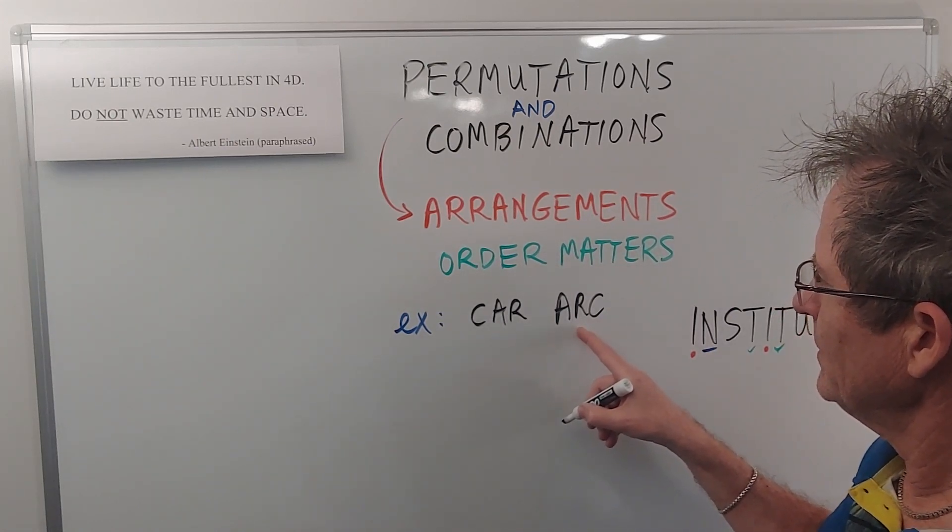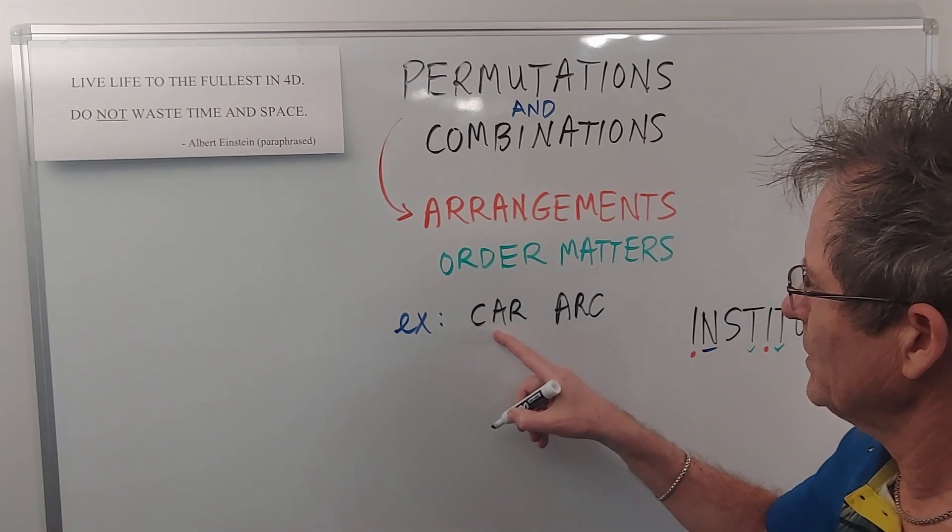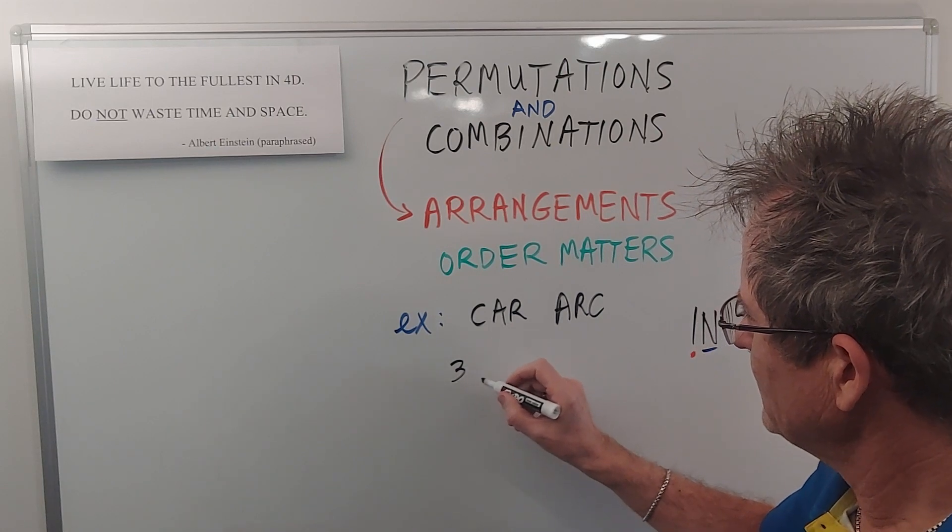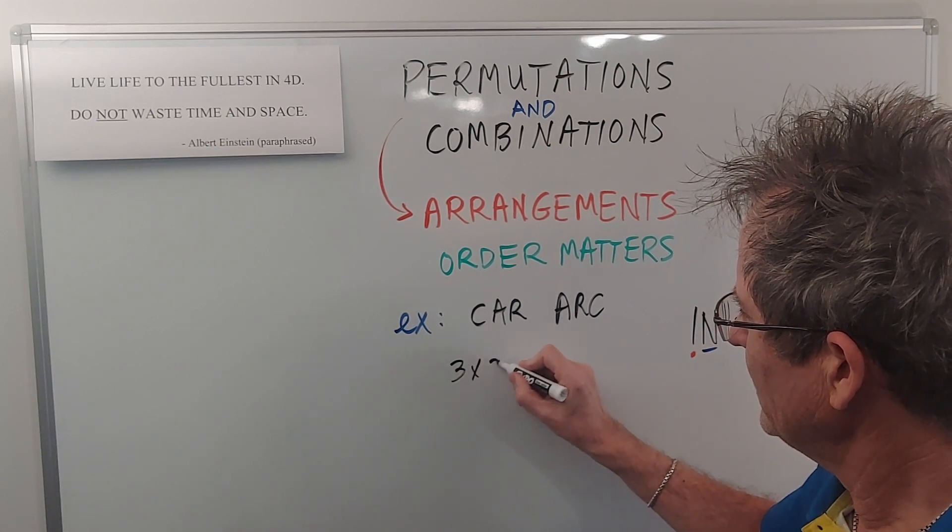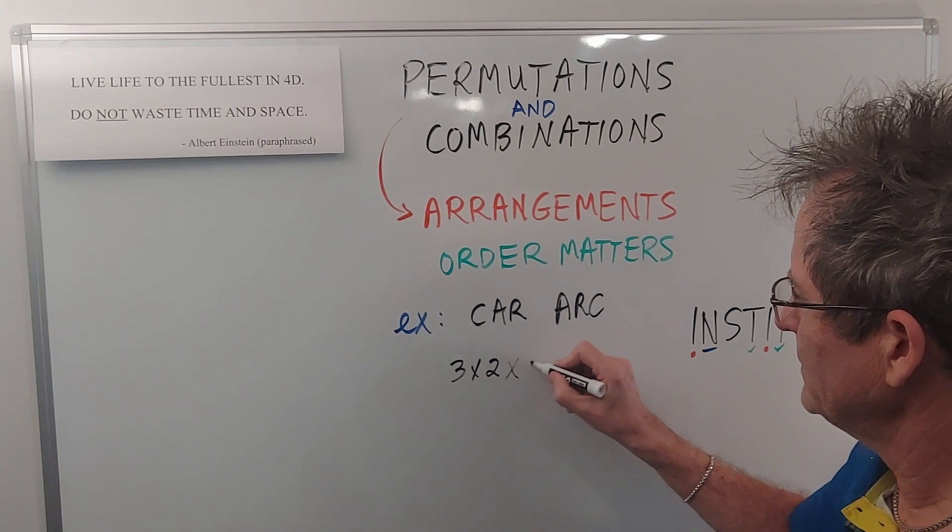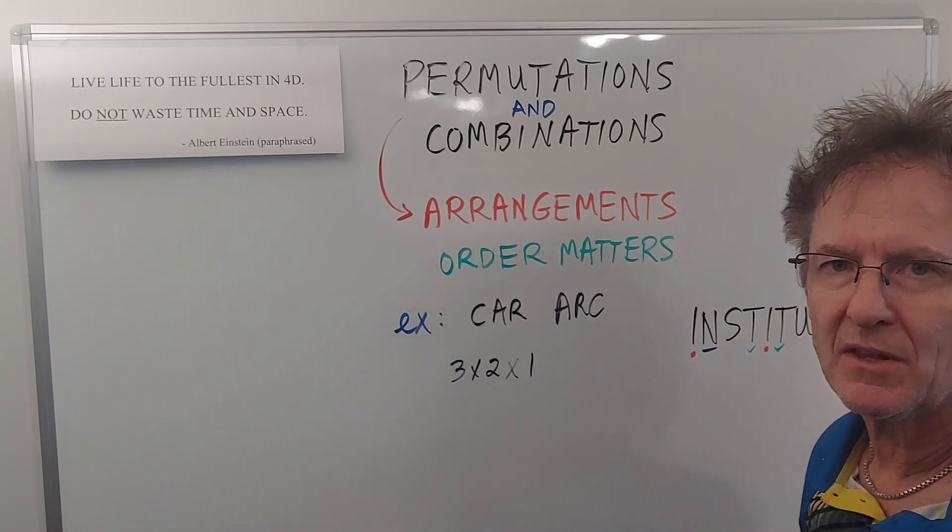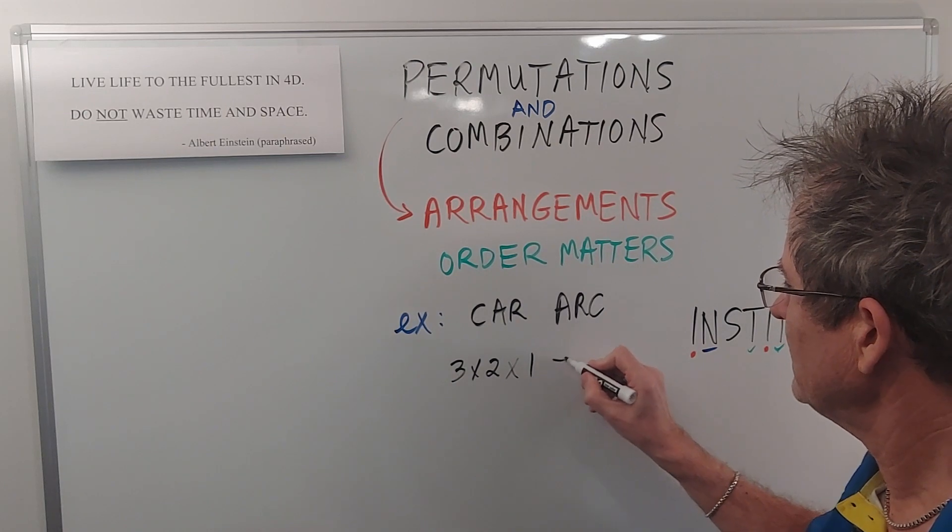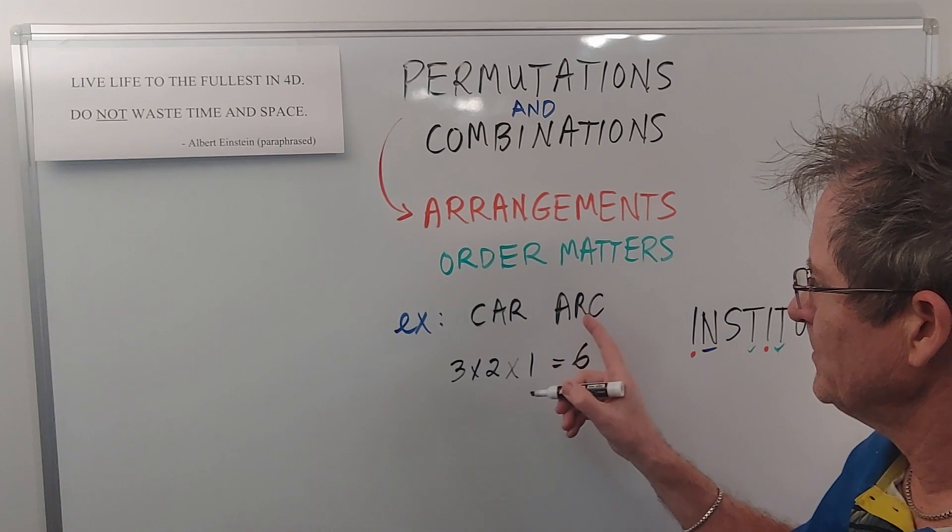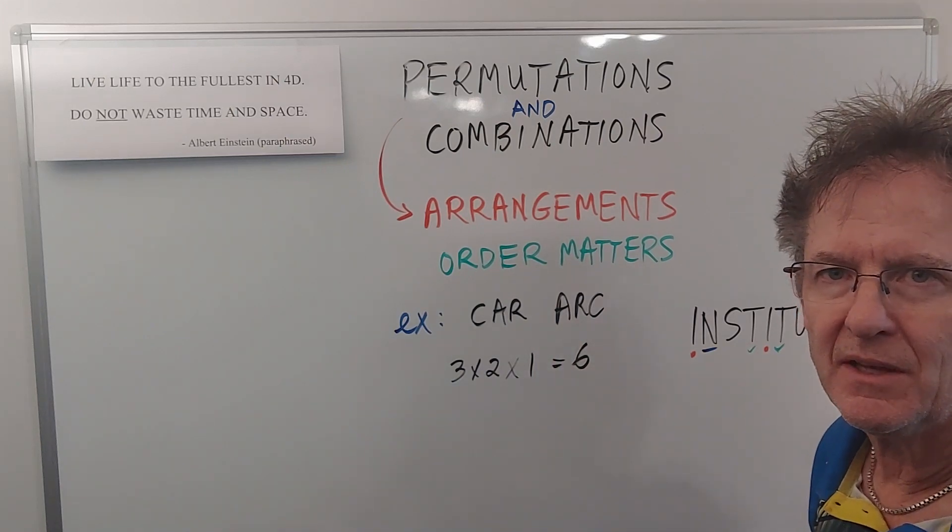So how many permutations can we get of the word CAR? Well, there's three choices for the first letter, followed by two choices for the second letter, and then essentially no choice - you have to pick the third letter. So there are six possible arrangements using the letters in the word CAR. I'm sure you can quickly write down the other ones. They may not spell words, but they're arrangements.